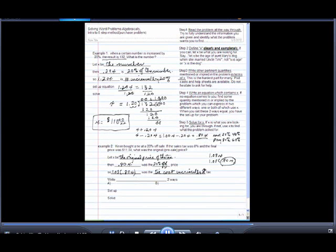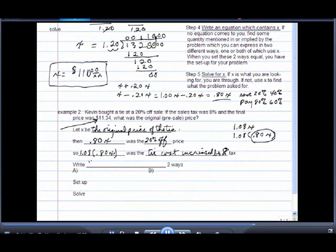Well, when it gets kind of hard to write an equation, find something you can write two ways. If I try to write the final price, I've already got one way to write it. So I'm going to say write the final cost of the tie two ways.